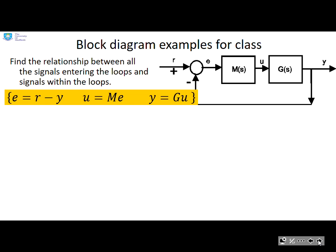Now what we want to do is find the relationship between all the signals entering the loops and signals within the loops. So the relationships between r and e, or r and u, or r and y. And we'll begin by looking at the relationship between r and y.